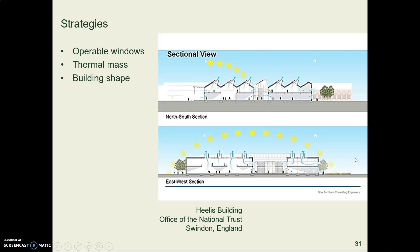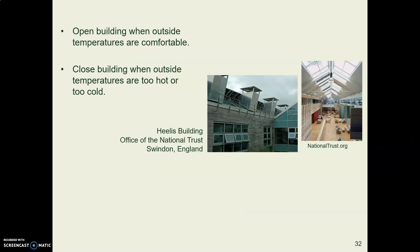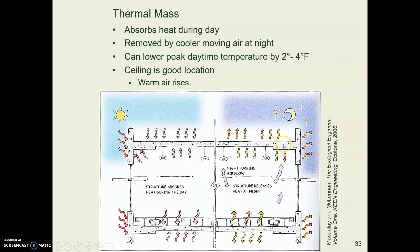Some general strategies: we want windows that open, thermal mass depending on the climate, and we might want to think about building shape depending on the strategy we're using. Operable windows allow building users to decide when to open or close them based on conditions. Thermal mass absorbs heat and keeps the building cooler in summer, evens out temperature swings, and absorbs heat in winter — and it's a good idea to have some thermal mass on the ceiling.